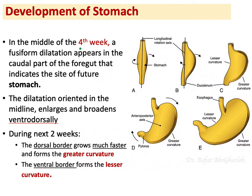Moving from the esophagus to the second part of the foregut, which is the stomach. The stomach is important, and in the fourth week it started as a fusiform dilation appearing in the caudal part of the foregut, indicating the site of the future stomach. This dilation is initially in the midline.